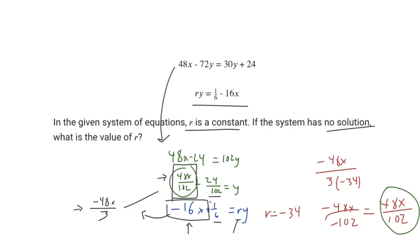The other thing we have to make sure here is that the y-intercepts are different, and they are vastly different. We've got 1/6, and if we have a value of negative 34, that's the same thing as multiplying 6 by negative 34. That will give us a very small number, a much smaller number compared to 24 over 102. Now, that means that the value of r has to be negative 34.